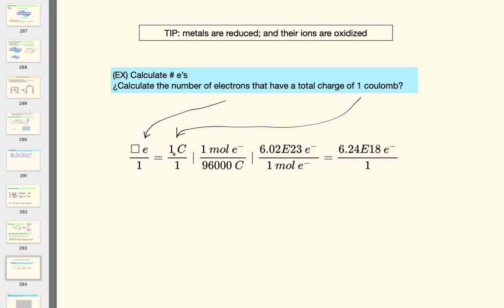At that point, it's a very simple matter to recall what we talked about earlier, and you're going from coulombs to moles, and moles of electrons to number of electrons, and there you have it. A simple two-step dimensional analysis problem.